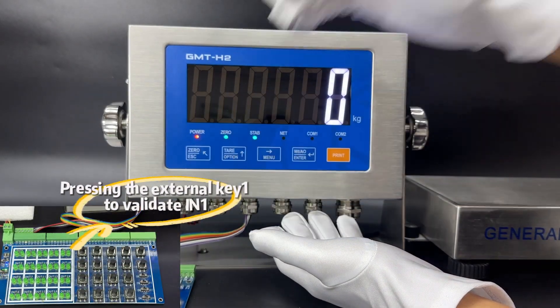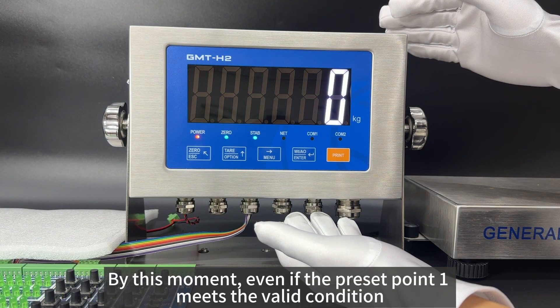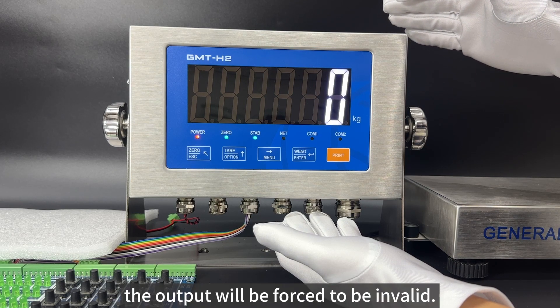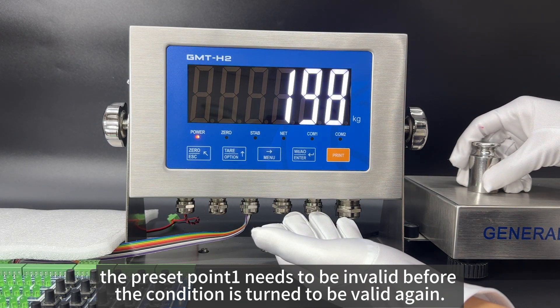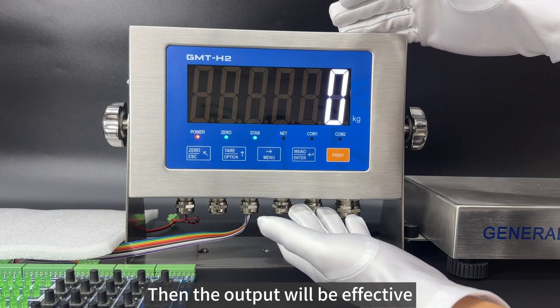Pressing the external key 1 to invalidate 1. By this moment, even if the preset point 1 meets the valid condition, the output will be forced to be invalid. Under this circumstance, the preset point 1 needs to be invalid before the condition is turned to be valid again. Then the output will be effective.